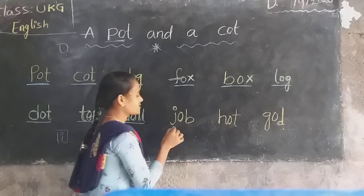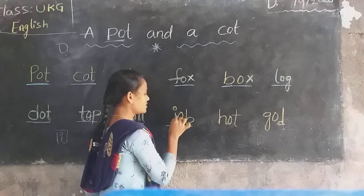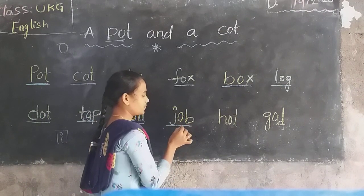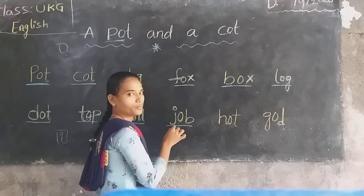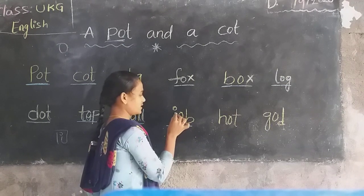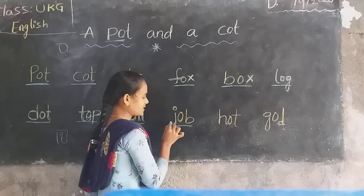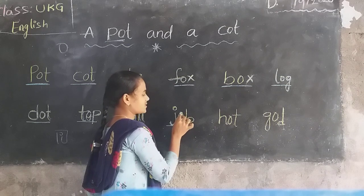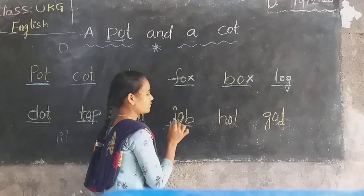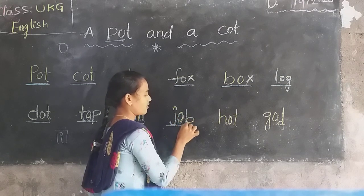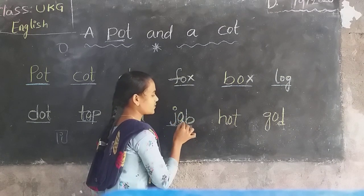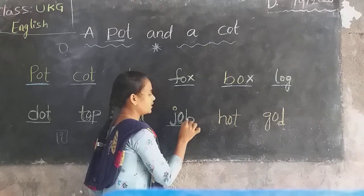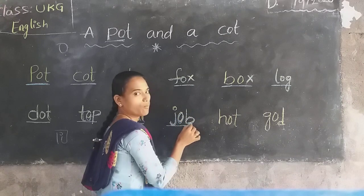Next word. J-O-B, job. Here, the sound of J is Ja. Next, O sound, O. Next, B sound, Ba. Here, J-O-B, job.